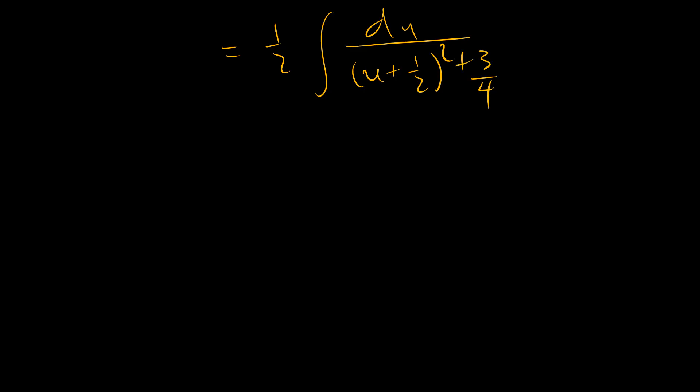And we want to substitute for u plus a half. And when you square it, this three quarter moves out. And we use a trigonometrical function that allows us to combine the two together. And one of that wonderful trigonometrical function is the tangent.